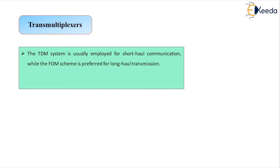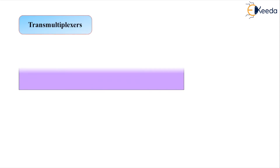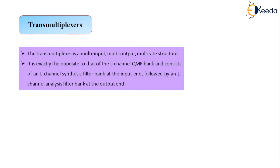Translation between TDM and FDM formats is necessary until complete digitization occurs. This purpose is fulfilled by the Transmultiplexer. The Transmultiplexer is a multi-input, multi-output, multi-rate structure — opposite to the L-channel QMF bank (Quadrature Mirror Filter bank) — consisting of an L-channel synthesis filter bank at the output end.